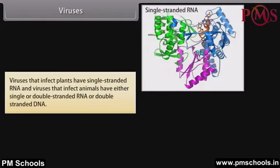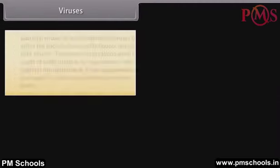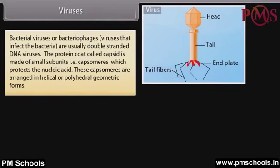Viruses that infect plants have single-stranded RNA, and viruses that infect animals have either single or double-stranded RNA or double-stranded DNA. Bacterial viruses, or bacteriophages, are usually double-stranded DNA viruses. The protein coat, called the capsid, is made of small subunits called capsomeres, which protect the nucleic acid. These capsomeres are arranged in helical or polyhedral geometric forms.